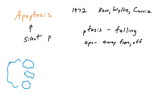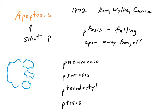The Greek professor helped them coin this term using two components: ptosis, P-T-O-S-I-S, the Greek term for falling, and the prefix apo, which means away, from, or off of — because it looked like pieces of the cell were falling off of it. The term apoptosis was coined in 1972, and they specifically said that the second P should be silent. There are silent P's in the English language: pneumonia, psoriasis, pterodactyl. And ptosis is actually a medical term for a droopy eyelid. So the term apoptosis is correctly pronounced when that second P is silent.